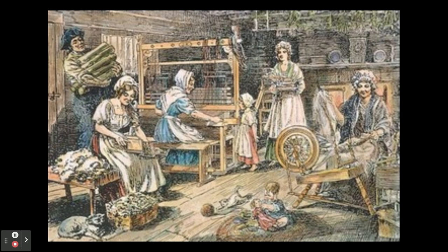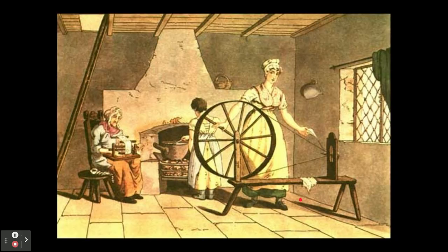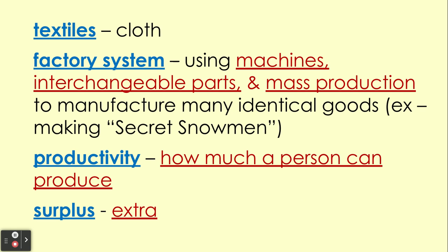Next up we have a bunch of blanks: textiles, factory system, productivity, and surplus. We're going to go through each of these. Textiles just means cloth or fabric. This was really the first product in the United States to be really affected by industrialization — it's going to be the textile industry. It is not about texting, it is not about tiles — it is all about cloth.